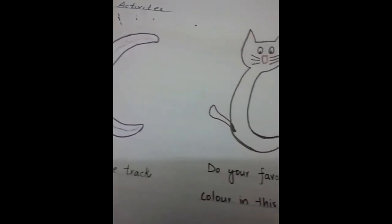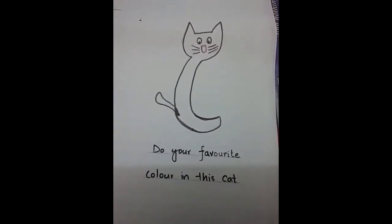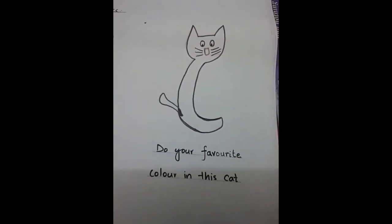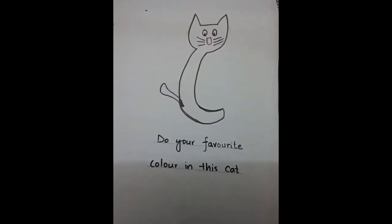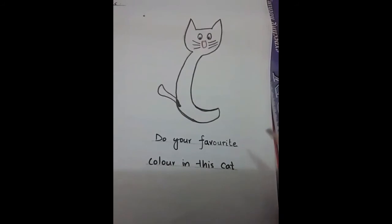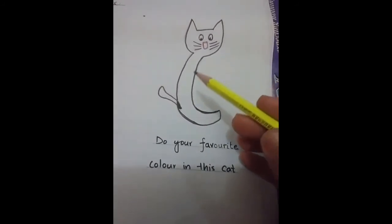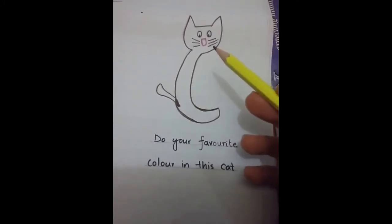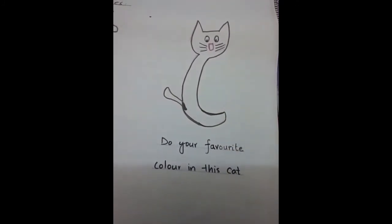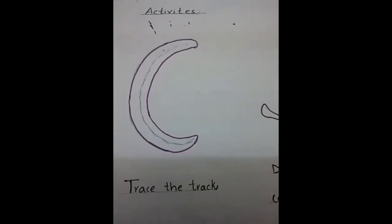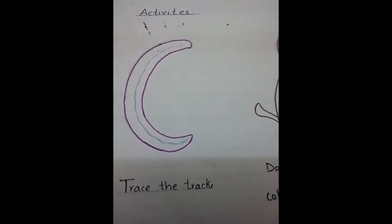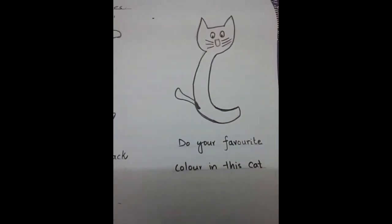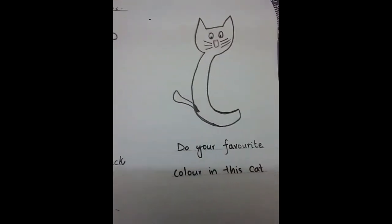Now next — this is a cat. This is a cat. Now do your favorite color in this cat. See cat, see cat. Excellent. Now you will do letter c on your rough notebook with the help of your mummy and baba.